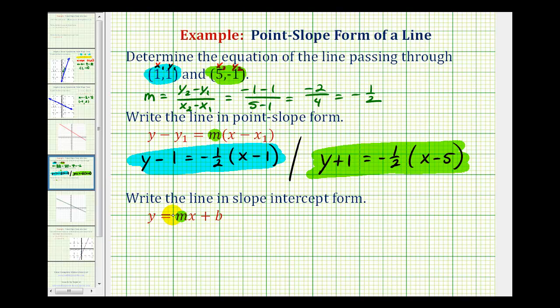And then for the second part, we want to write the linear equation in slope-intercept form. And since we already have point-slope form, we can take either of these equations and solve for Y. Let's go ahead and use this first one. So if we have Y minus 1 equals negative 1 half times the quantity X minus 1,